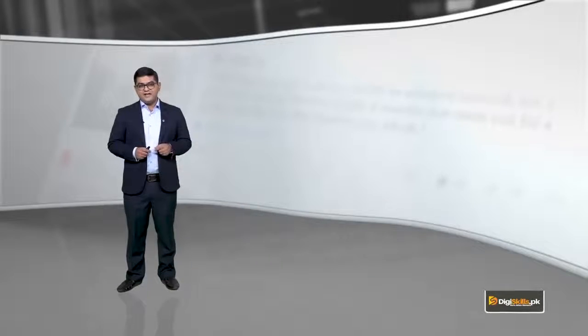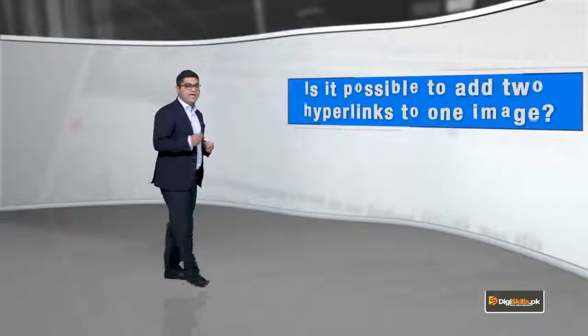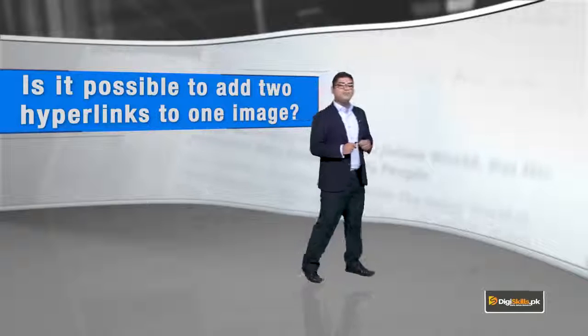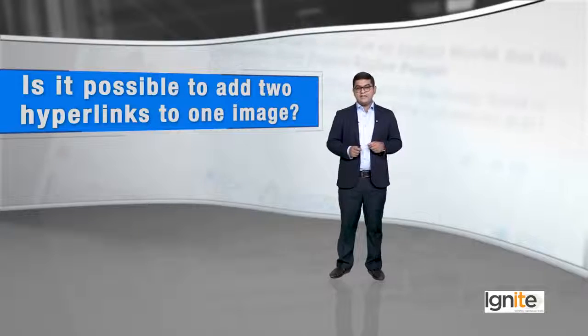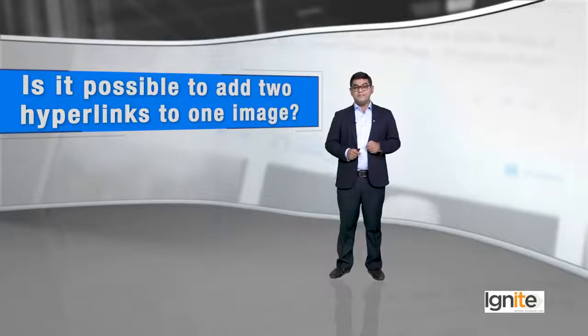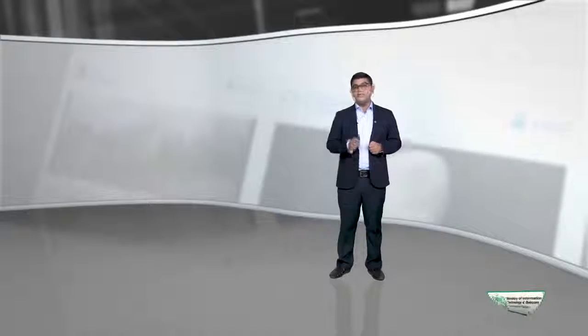When it comes to linking media, a question jo aapke zehn mein yahaan pe shayad aaye — jo aap shayad soch bhi rahe ho — ke is it possible to add two hyperlinks to one image? Very interesting question. Sochen zara. The short and sweet answer to that is a no. Bilkul usi tarah jis tarah life mein aapke paas kaafi raaste hote hain, lakin aap ek raaste pe hi chal ke apni destination tak pahunch sakte hain, waise hi links are a one-way destination. Image pe bhi usi tarah, you can add just one location or one link.